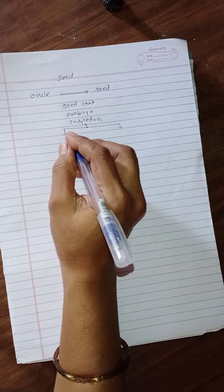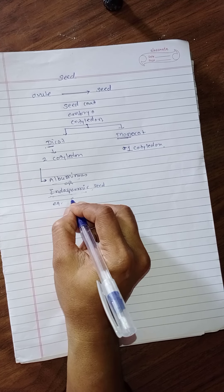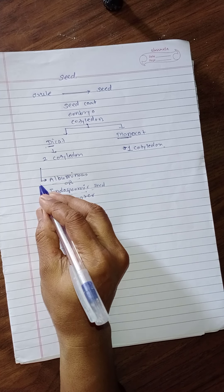The first type is albuminous, also known as endospermic seed. Endospermic means the endosperm formed at the time of development is not completely used up during embryo development. In some seeds this endosperm remains, and that seed is known as endospermic or albuminous seed. Example is castor.